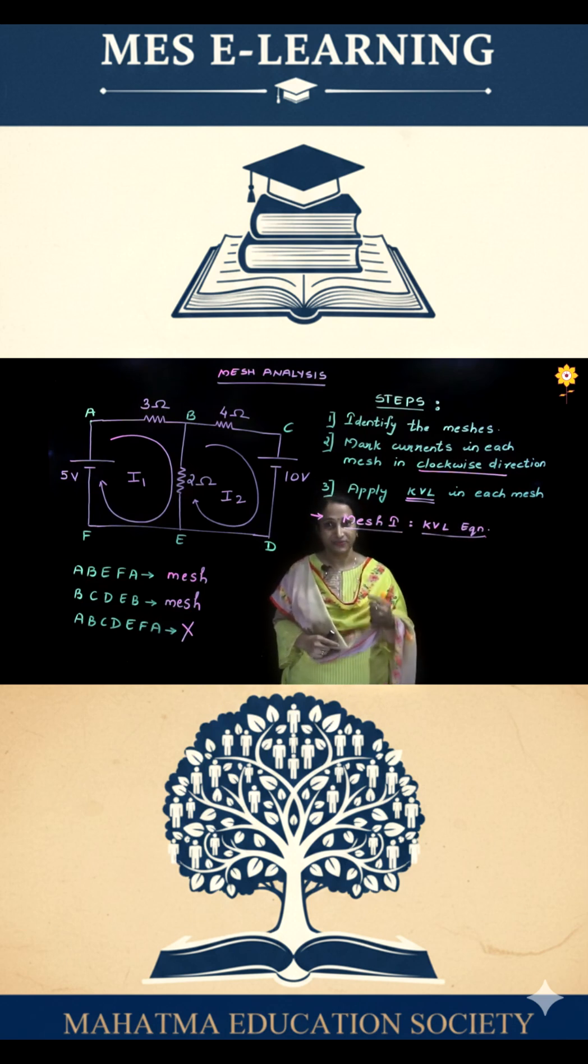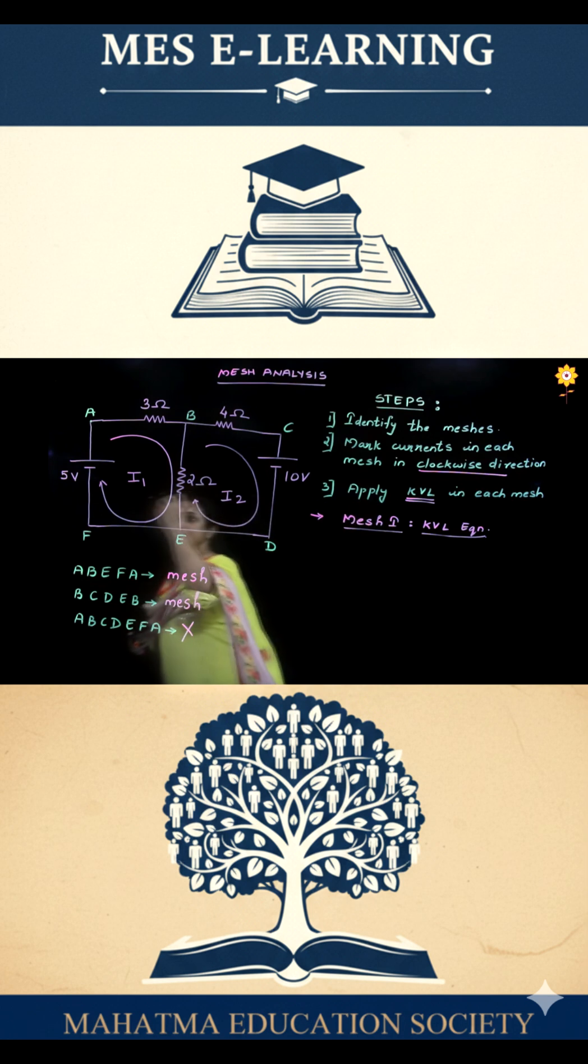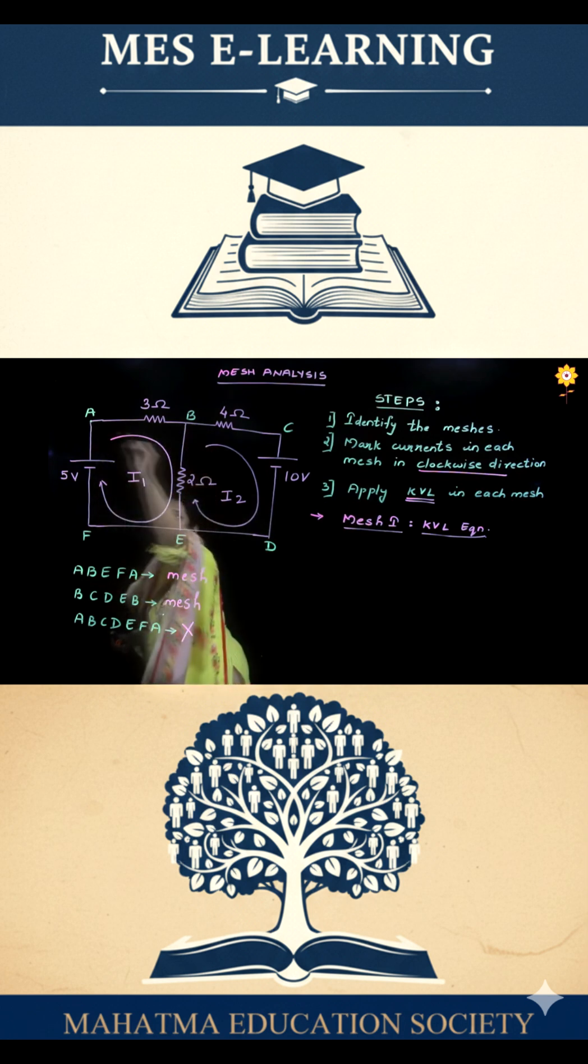As you all know, when you are writing KVL equation, you need to trace the path of the closed path in order to write the equation. So in this case, let us say this is one path. Since this is one mesh, let us mark in the clockwise direction.